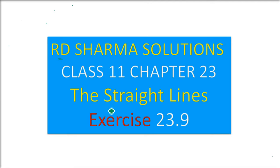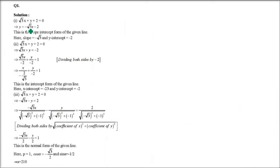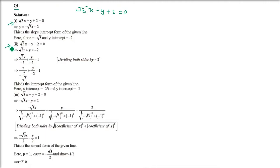We are taking R.D. Sharma's solution. This is Class 11, Chapter 23, on straight lines, Exercise 23.9. In the first question, Question 1, there are three parts. The question is: reduce the equation √3x + y + 2 = 0. We have to find three things: first, slope-intercept form and find slope and y-intercept; second, intercept form and find intercepts on the axis; and third, normal form and find p and alpha.